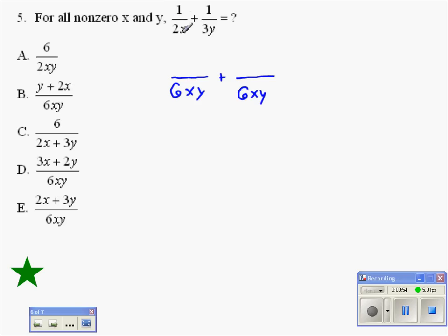For the first fraction to have a 6xy denominator, we have to multiply the denominator times 3y. To be fair, we need to also multiply the numerator times 3y. 1 times 3y is 3y.